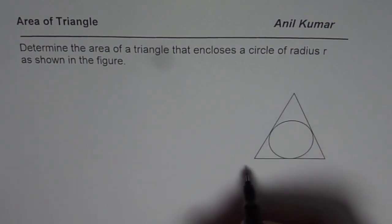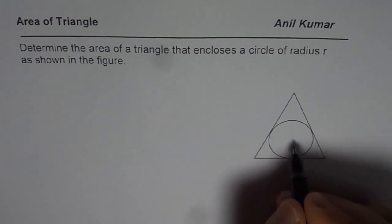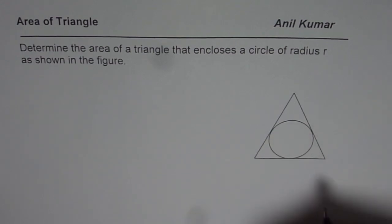So what we have here is an equilateral triangle in which we have a circle. Now from the figure it doesn't really look like an equilateral triangle but this is best I could draw. We need to find the area of the triangle and what we are given here is that the radius of this circle is R. How are you going to find it?